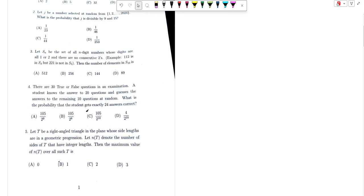This question says that there are 30 true or false questions in an examination. A student knows the answer to 20 questions and guesses the answer to the remaining 10. Exactly like ISI's paper, some students do.